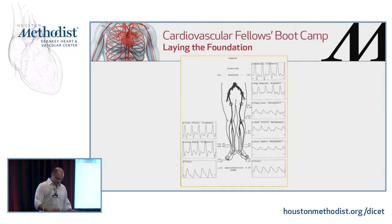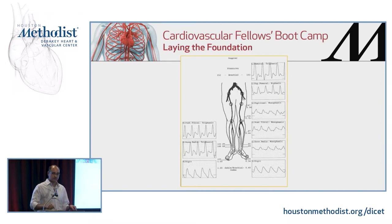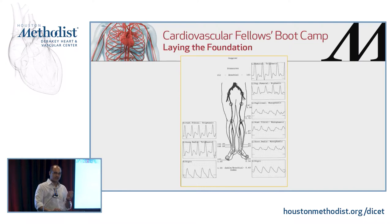For ABIs: take blood pressure on both arms. The higher blood pressure is what you want as the brachial, then measure ankle pressure on both sides - so ankle brachial index. 1.3 to 0.91 is normal. 0.90 is abnormal - remember that. Please don't think that 0.9 means normal. Think about exercise-induced ABIs in those kinds of situations.